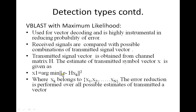The estimate of the transmitted symbol vector X is given by: X_hat = argmin ||R - H·x||^2 over all possible x. This is the main ML formula — you take the norm of the difference between the received vector and the expected received vector, find its minimum over all possible combinations, and that argument is your estimate. The assumption is x_k belongs to one of the total estimated vectors {x1, x2, …, xN}, and error minimization is performed over all possible estimates.